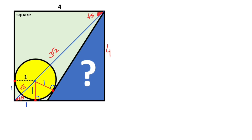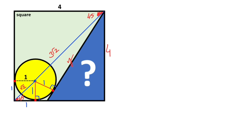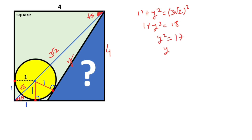Let's call this value y. For this triangle, if we apply the Pythagorean theorem, we get: 1 squared plus y squared equals (3 root 2) squared. Therefore, 1 plus y squared equals 18, so y squared equals 17. That means y equals root 17.